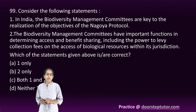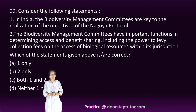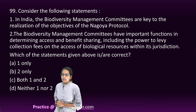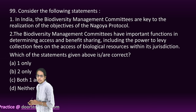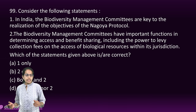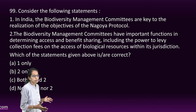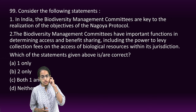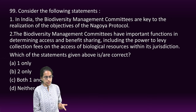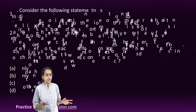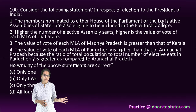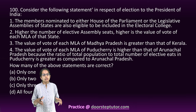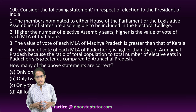The next question is about Biodiversity Management Committees (BMCs), which are key to the objectives of the Nagoya Protocol — that's correct. They have an important function in benefit sharing and the power to levy collection fees. So both statements are correct.